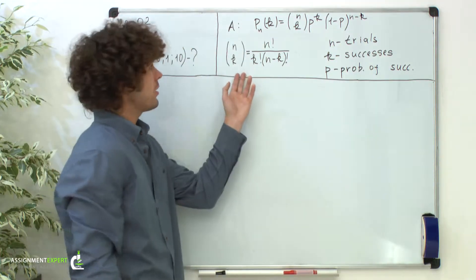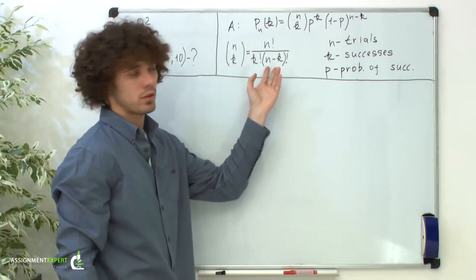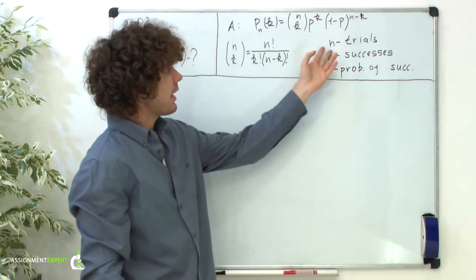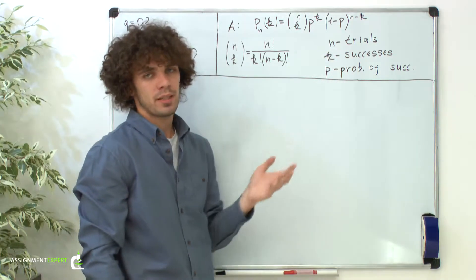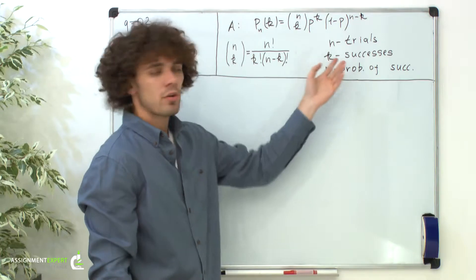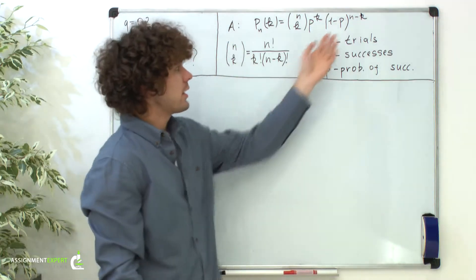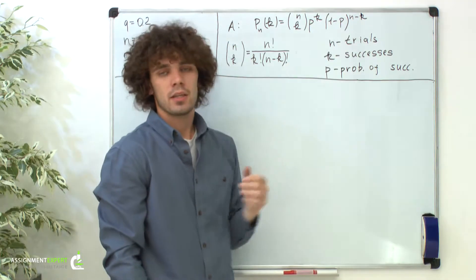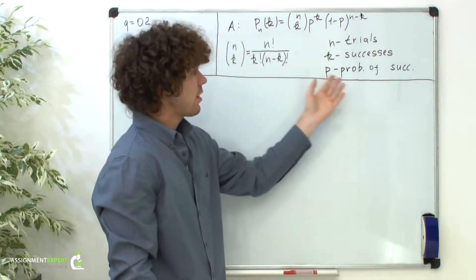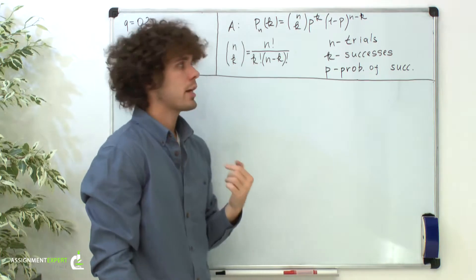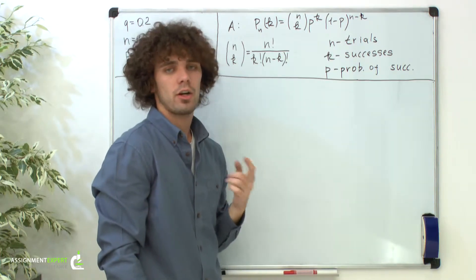n choose k equals n factorial over k factorial times n minus k factorial. n in the formula stands for the number of trials or independent tests. k is the number of successes, and success is when event A occurs. Then n minus k is the number of failures when this event will not occur. p is the probability of success in one trial, and 1 minus p is the probability of failure in one trial.